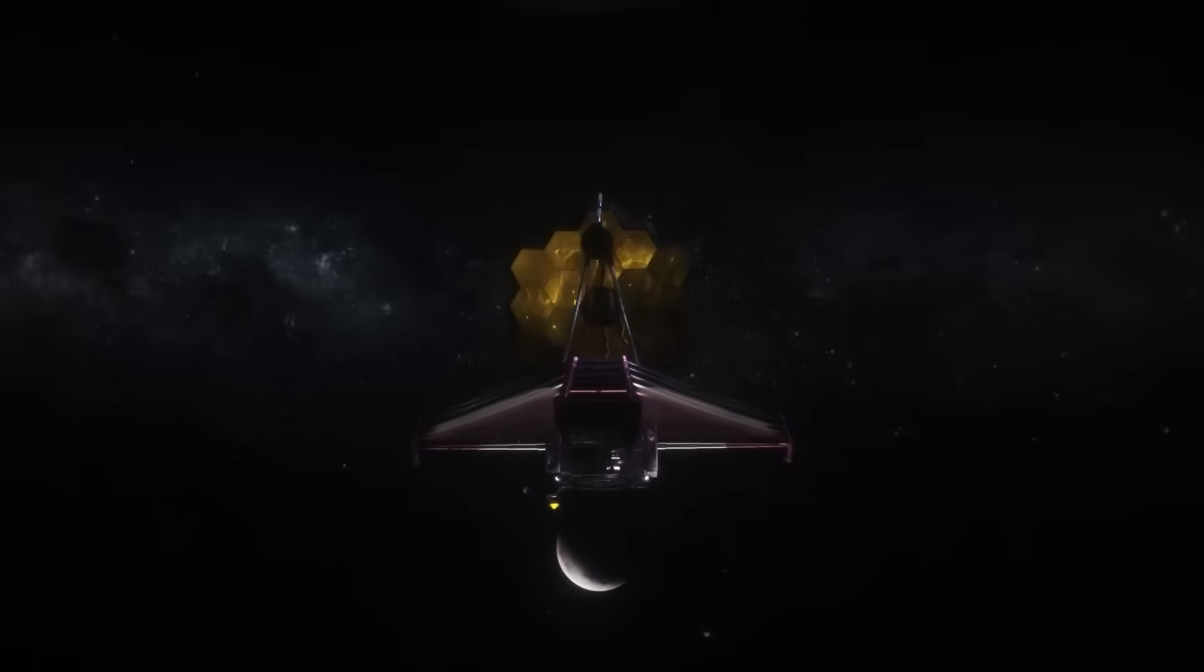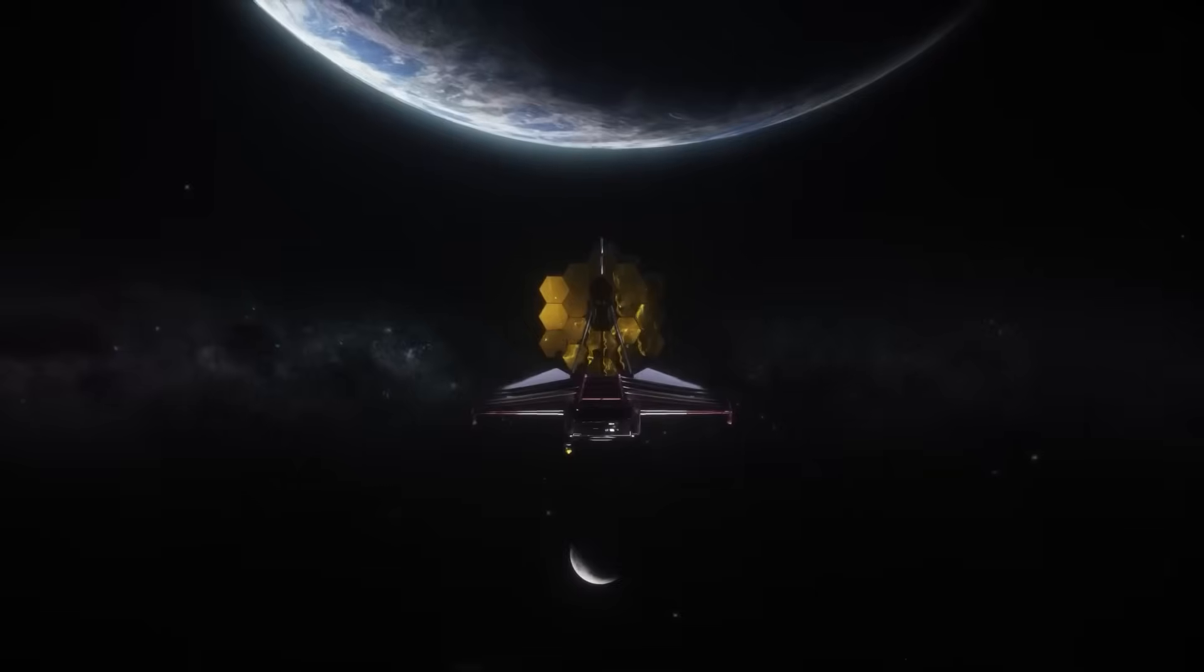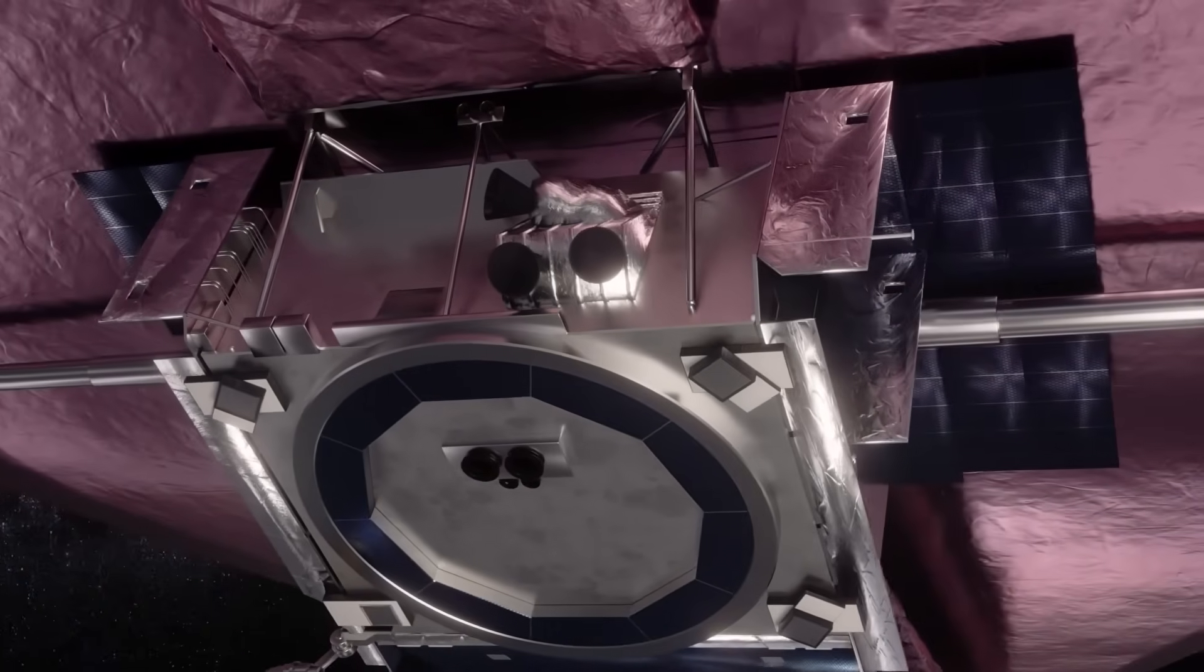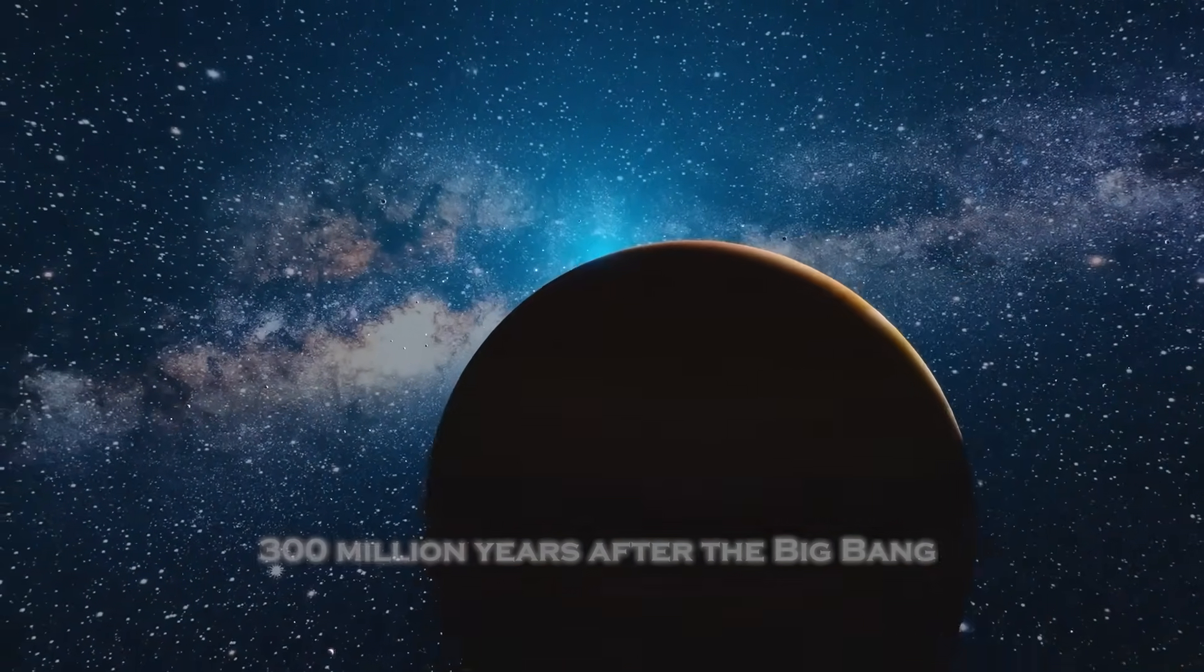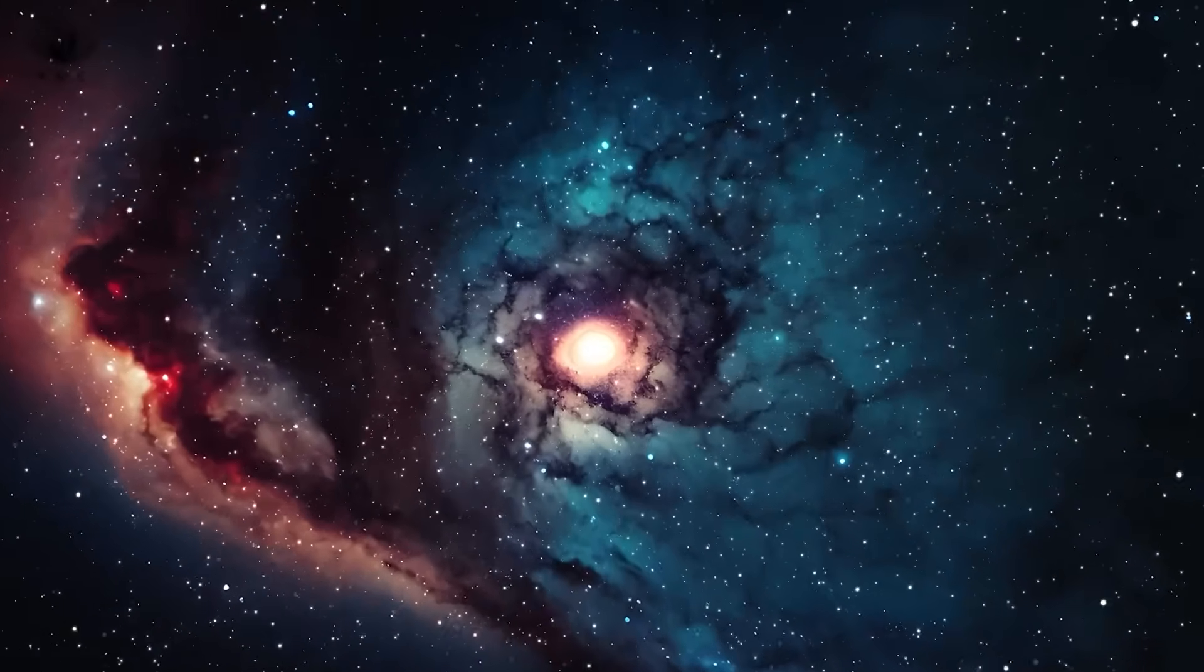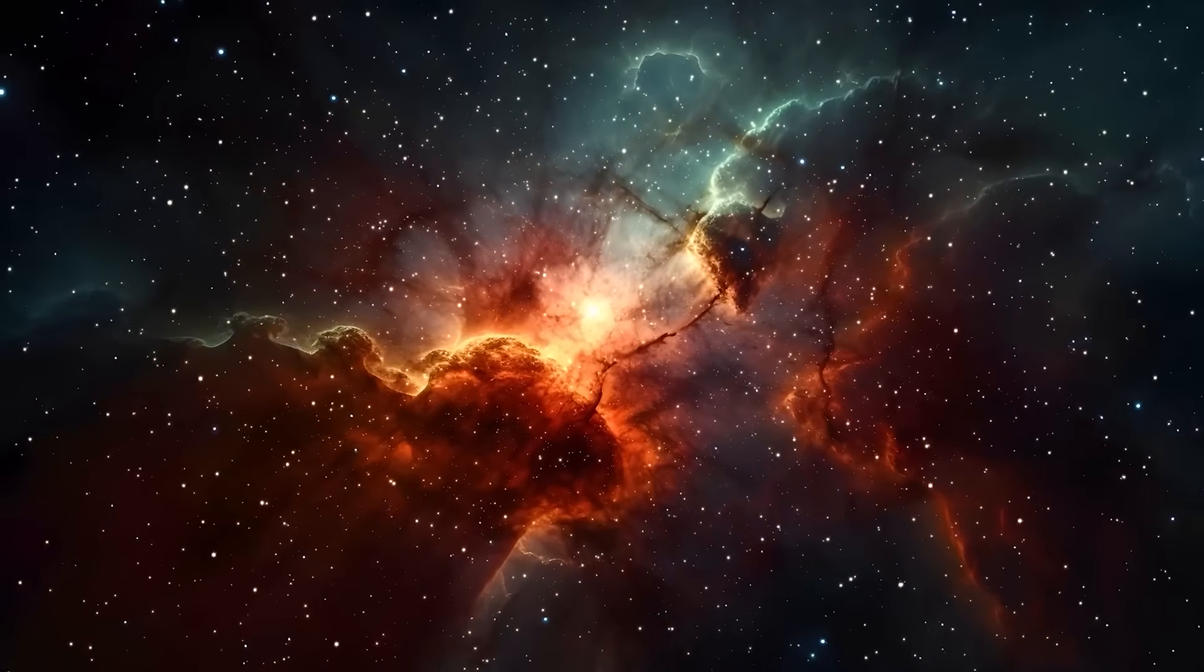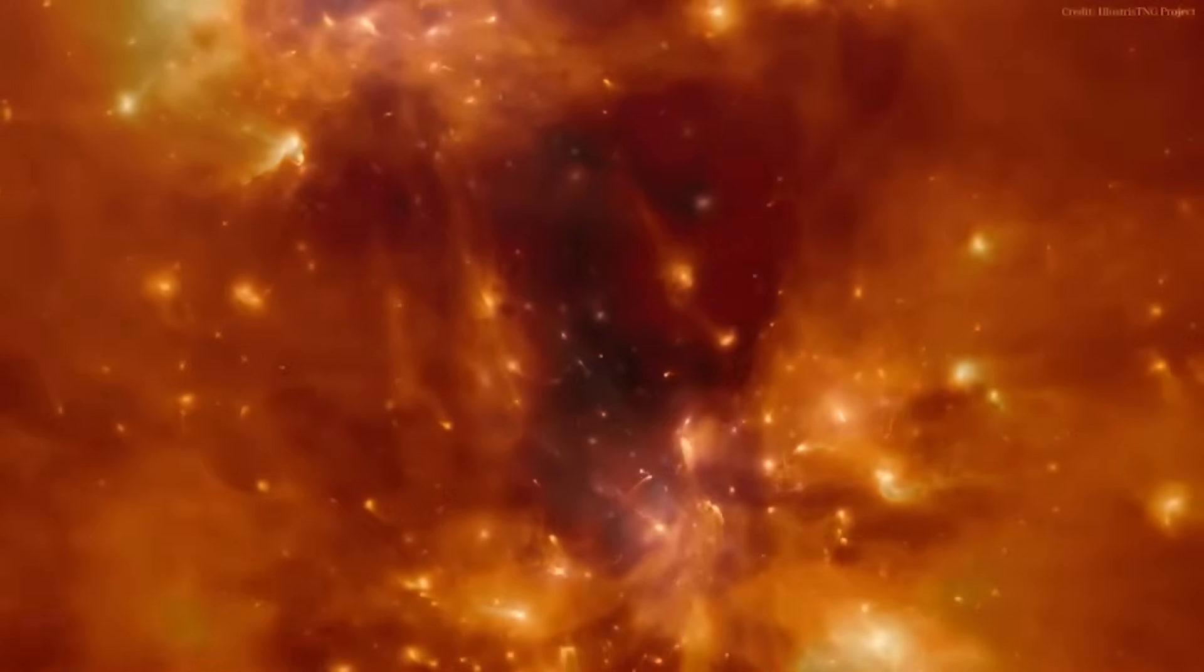Enter the James Webb Space Telescope, the most advanced eye humanity has ever turned towards the heavens. Webb has peered deeper into the cosmos than ever before, uncovering galaxies that existed just 300 million years after the Big Bang. But here's the kicker: these galaxies are far more massive and mature than they should be for their age. Could the universe be older than we think? The discovery of these impossible galaxies combined with the paradox of M92 suggests we may need to rethink everything we thought we knew about the age and evolution of the universe.